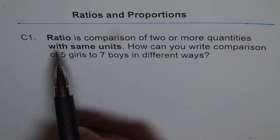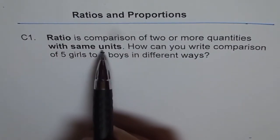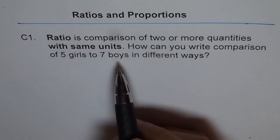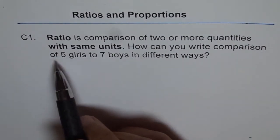Ratio is a comparison of two or more quantities with same units. The unit should be same - that is critical for every ratio. Now, as an example, we have: how can you write comparison of five girls to seven boys in different ways?